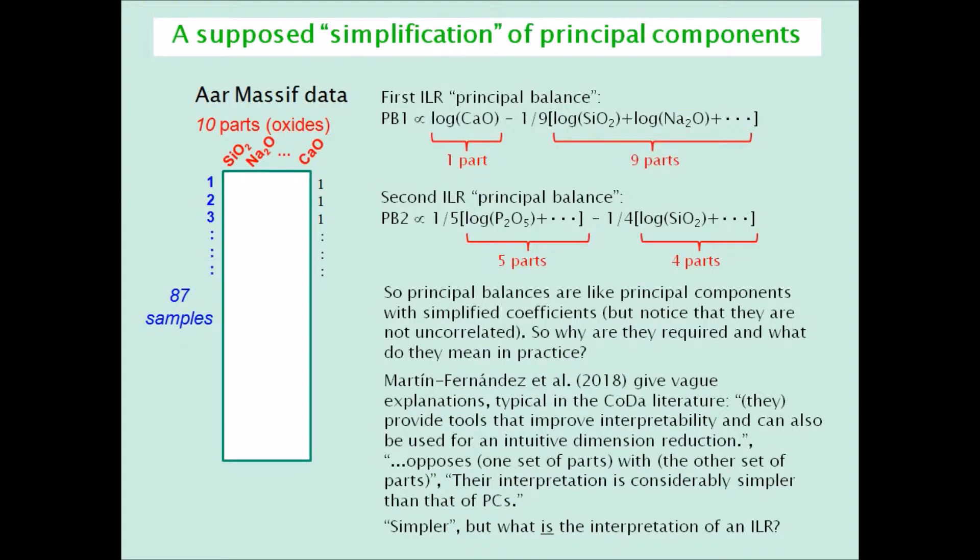But what do these new variables on the axes actually mean? They also say that a balance opposes one set of parts with another set, and that their interpretation is simpler than that of principal components. So they say it is simpler, but they give no explicit interpretation.